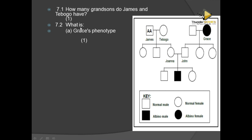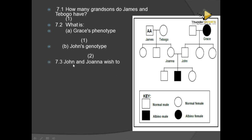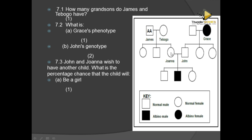They are asking: what is the genotype of Grace? Grace is already affected — she is an albino female, so her genotype is homozygous recessive (small a, small a). What is the genotype of John? Since John and Johanna produced one albino child, both parents must be heterozygous: capital A, small a. John and Johanna wish to have another child.